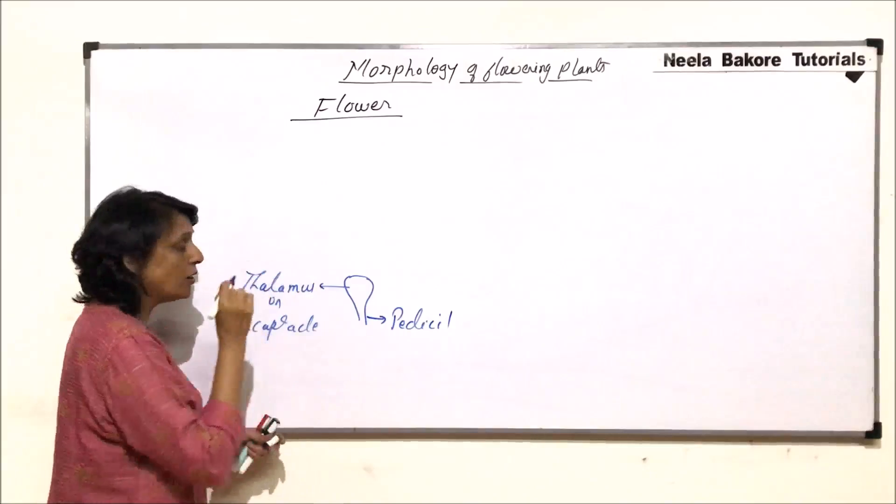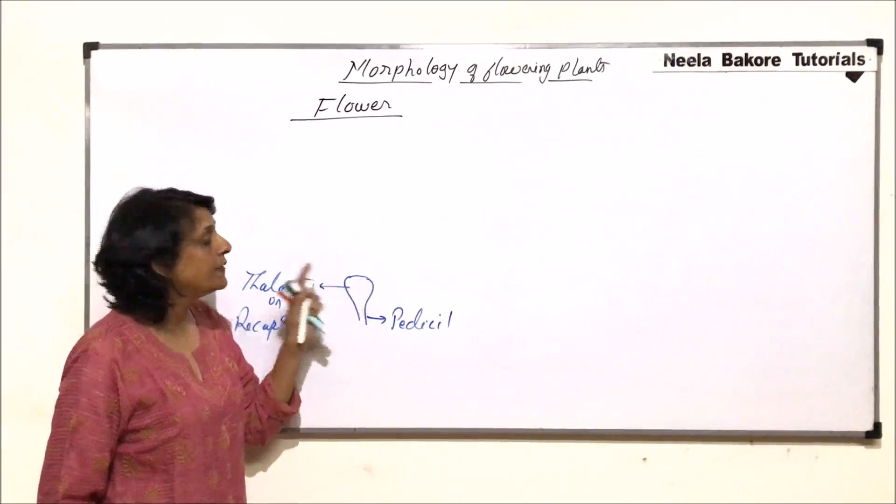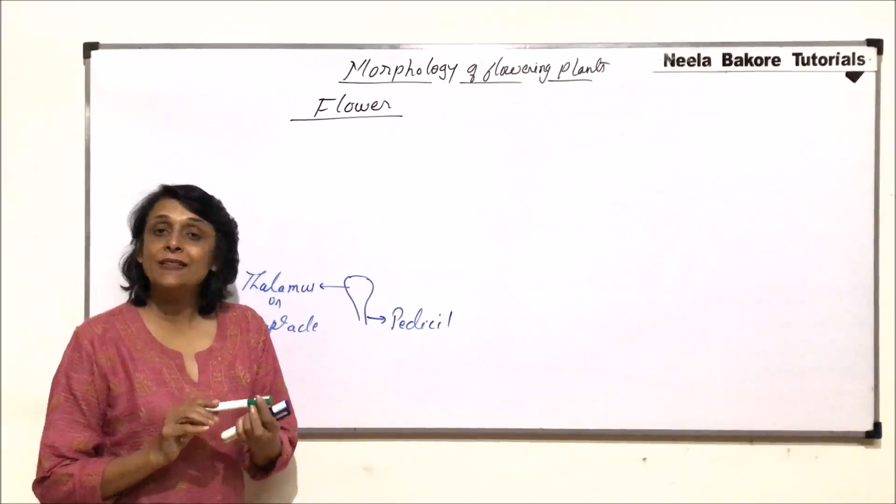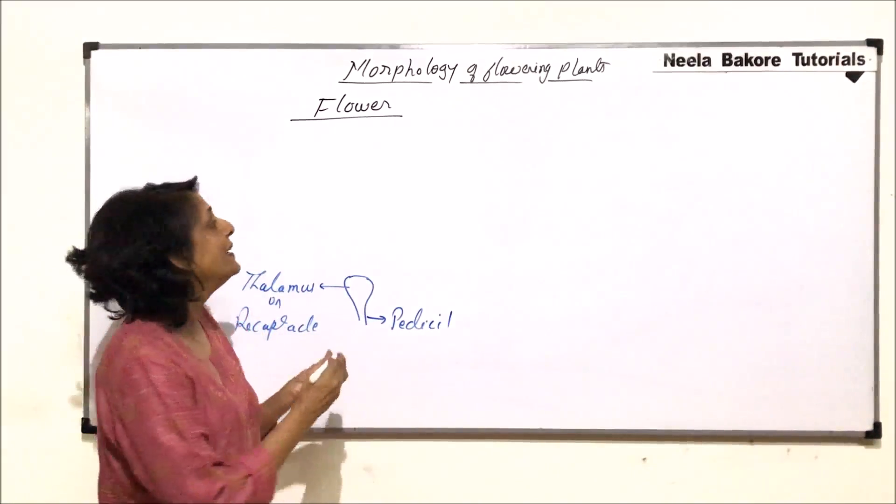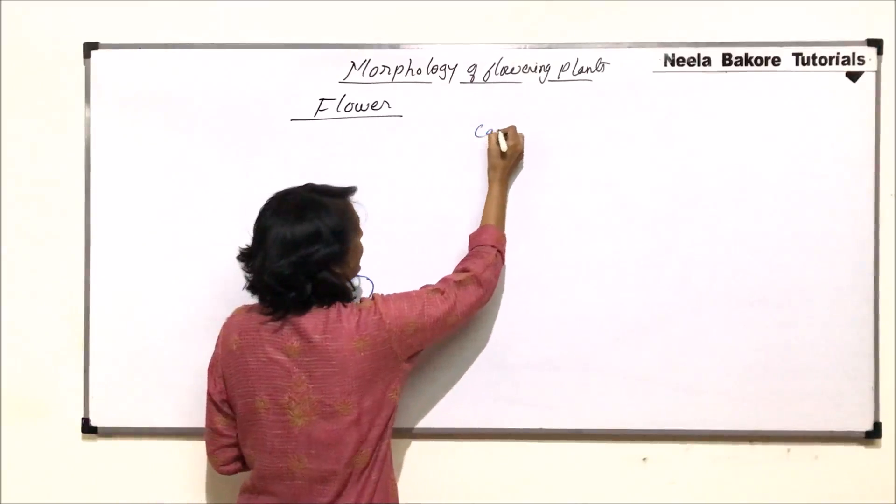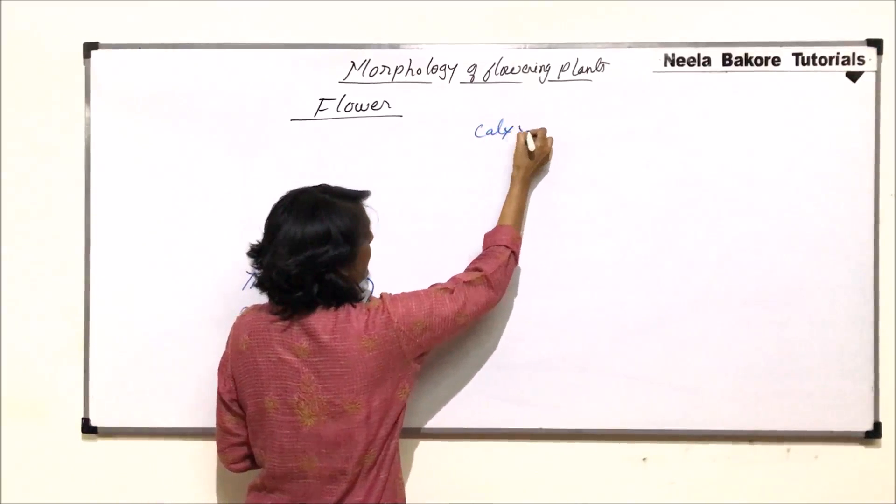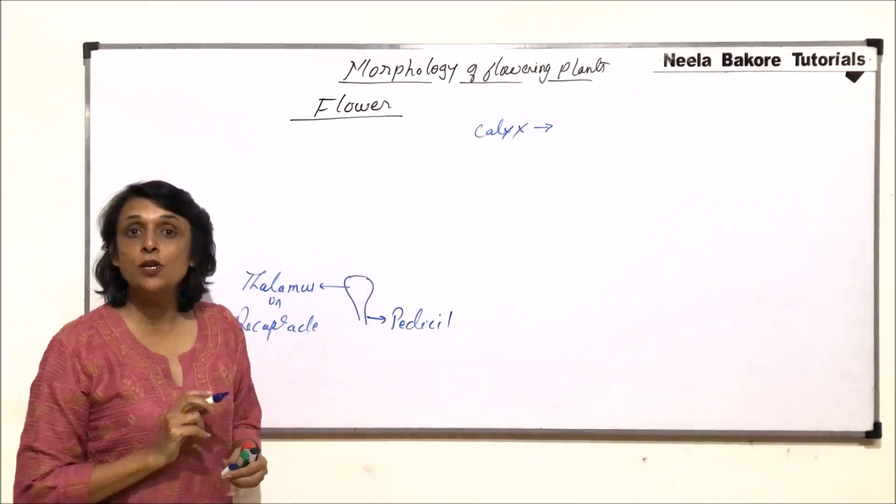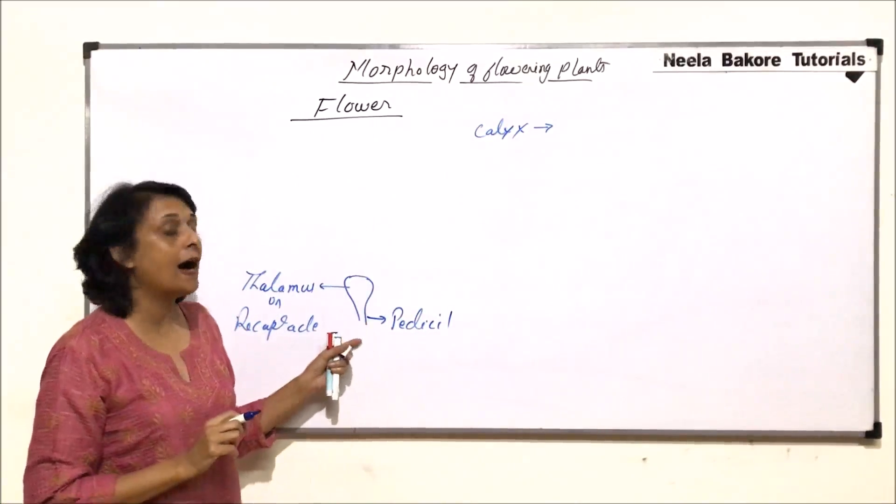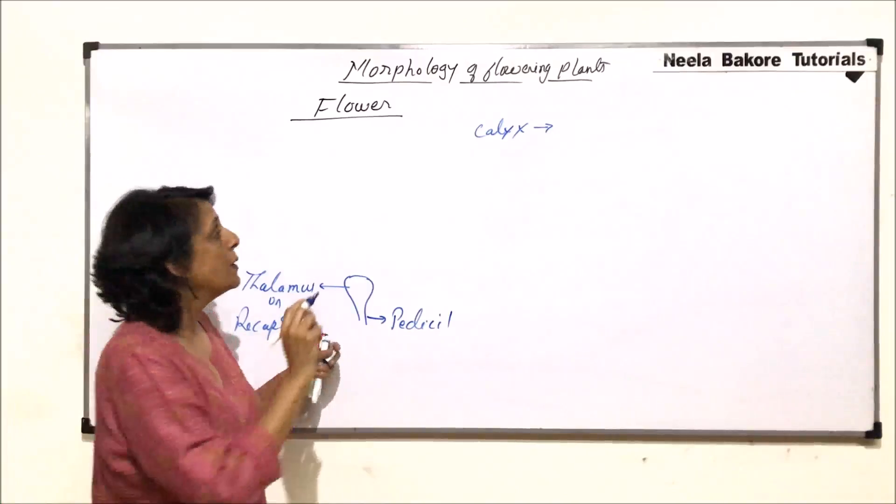And all the floral whorls, they are arranged on this part. The outermost whorl is normally green and it is known as calyx. This is the outermost green part and its function is to protect the flower when it is in the form of bud.